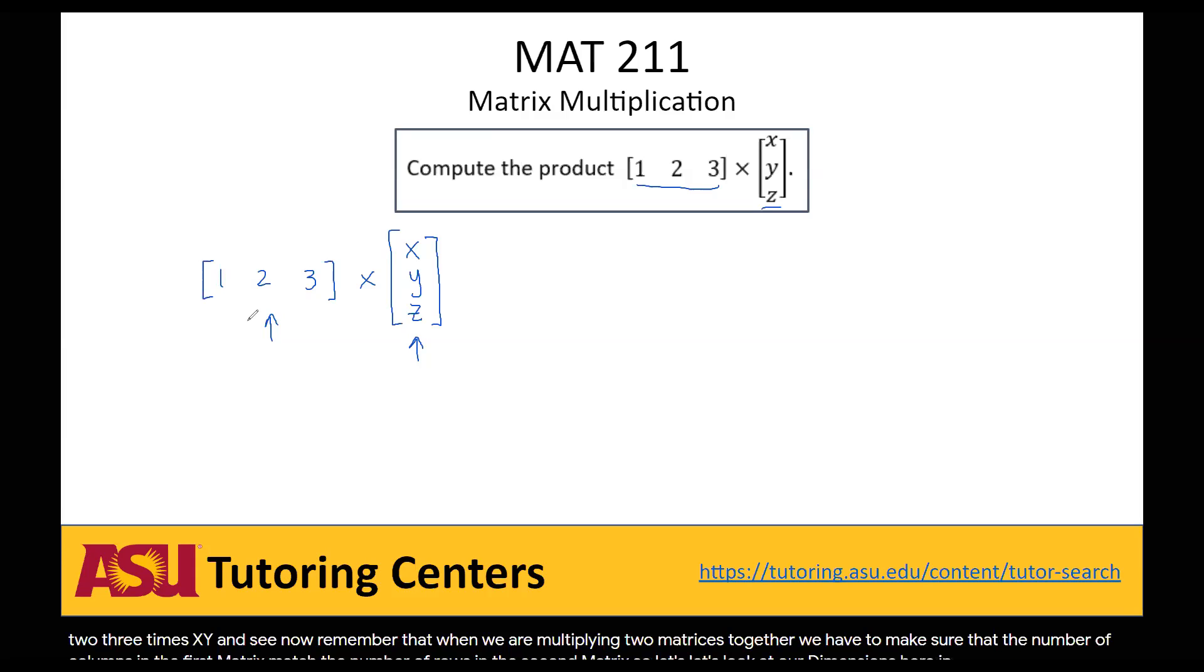In our first matrix here we have one row and three columns, so it's a 1 by 3 matrix, and in our second matrix we have three rows and one column.